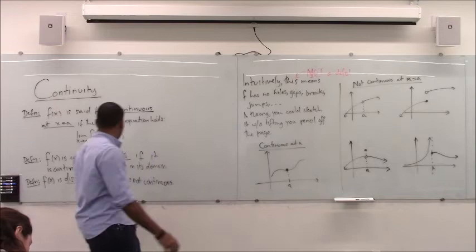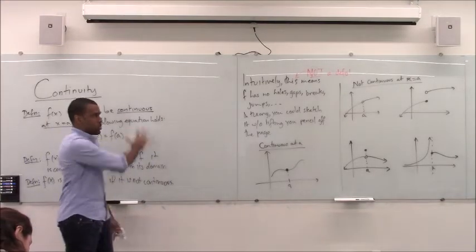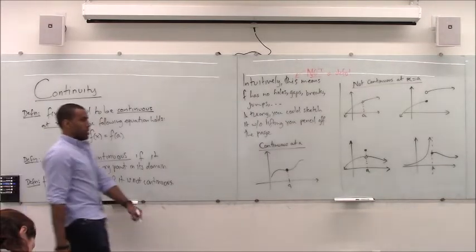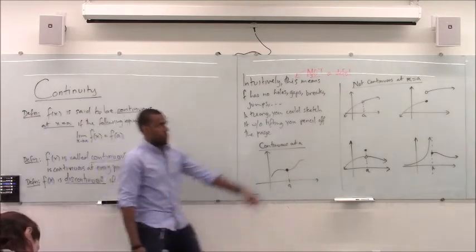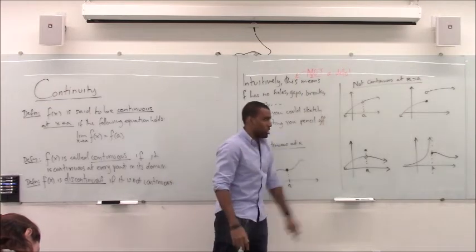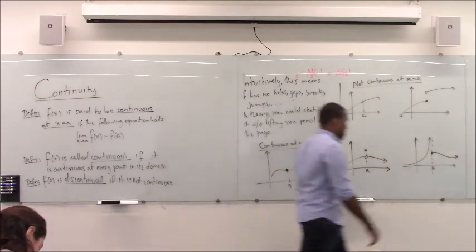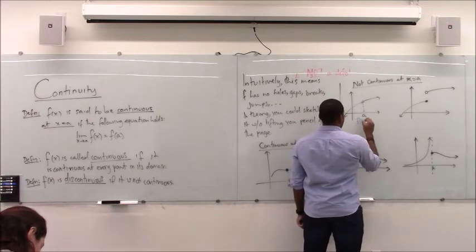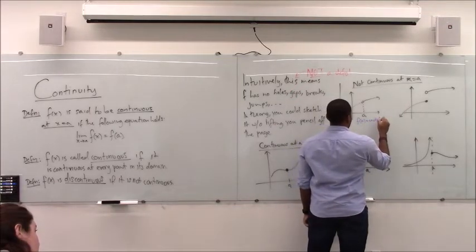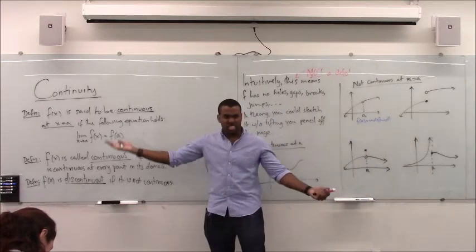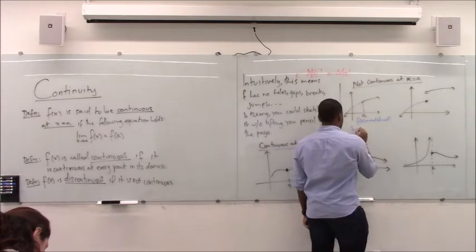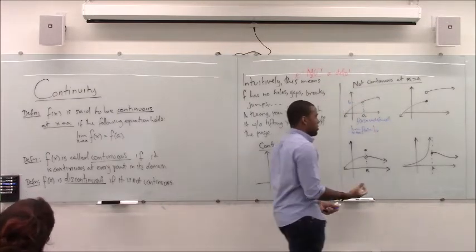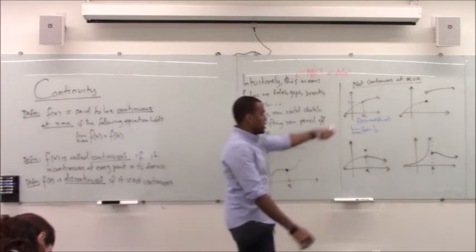Curiously enough, this one little equation actually captures all of that. Whenever this equation holds, continuity holds. Whenever it does not, one of those disruptions will occur. You can verify this with each example. Here, f of a is undefined, so the equation can't work because the right side doesn't make sense — the limit exists, let's call it b, but the right side doesn't work. In another case, f of a is defined as b, but the limit does not exist because the left and right sides don't match.